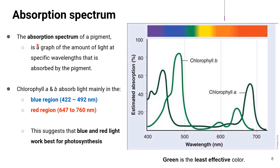When different pigments that absorb different wavelengths of light are measured using a spectrophotometer, an absorption spectrum is plotted. It is a graph that shows the amount of light absorbed by the pigment at specific wavelengths.